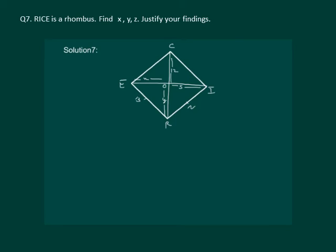It is given that RICE is a rhombus. That means it is also a parallelogram and the diagonals will bisect each other.